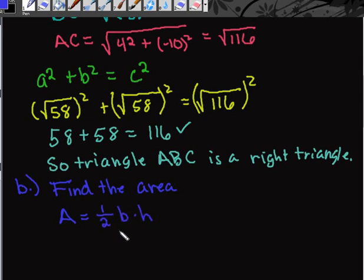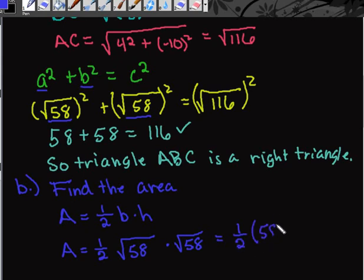In a right triangle, your base and height have to be your two legs. So to find the area, we would do one half times the square root of 58 times the square root of 58. We end up with one half of 58, which gives us 29 square units.